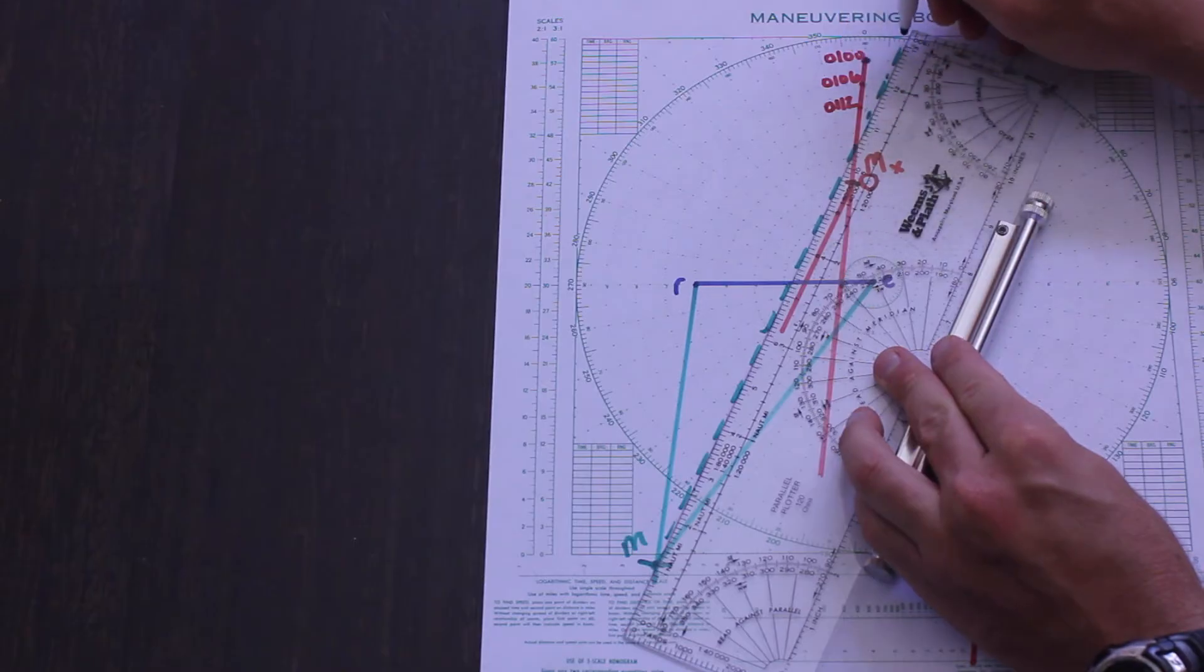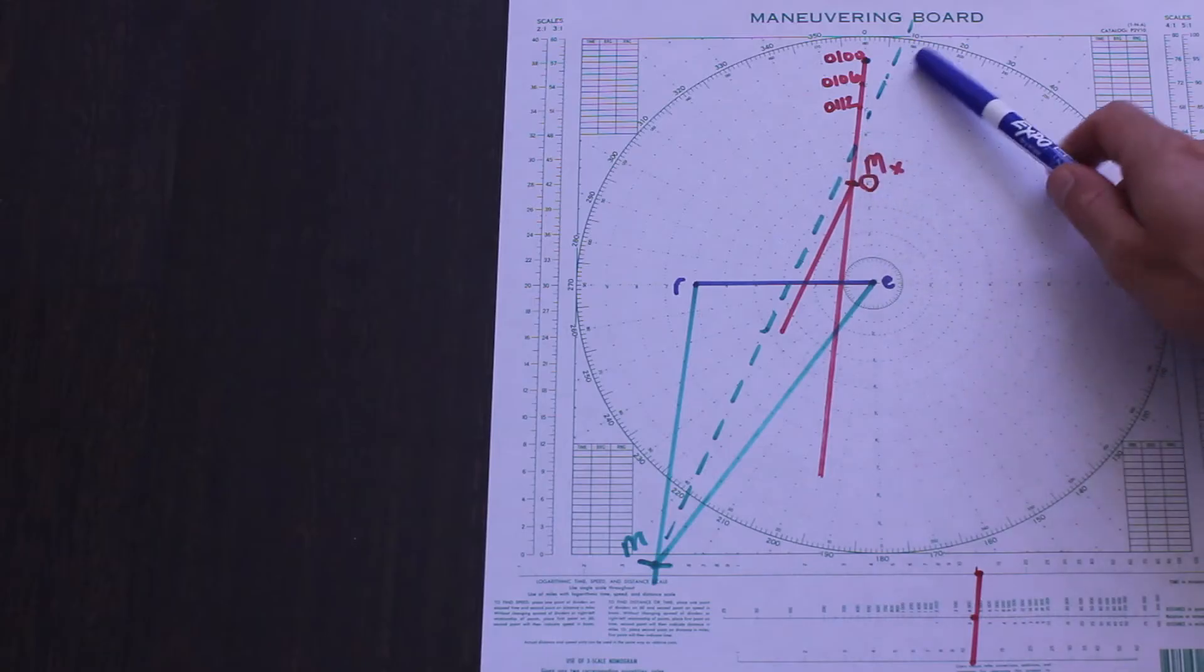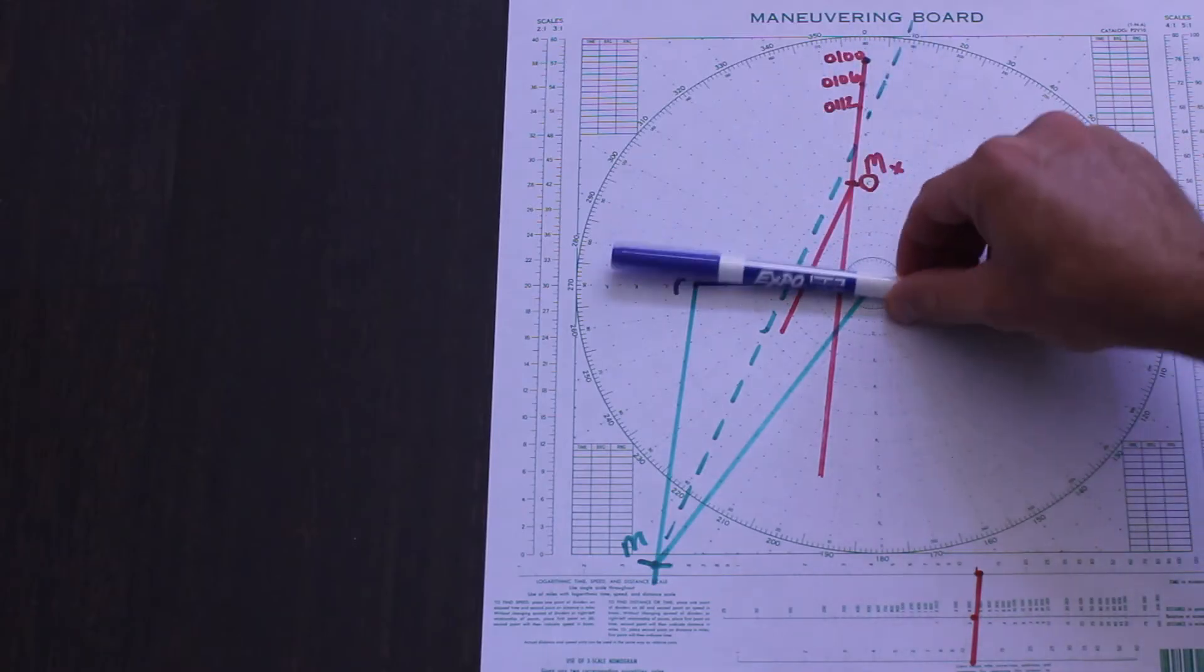The cool thing is, as long as we match our vector to anywhere along this line, our wish of a 2 nautical mile CPA will come true. So we could turn north and keep our speed.